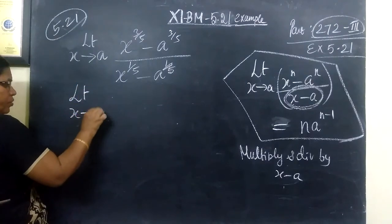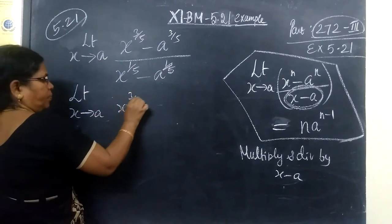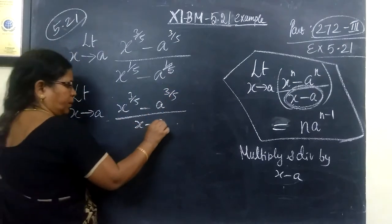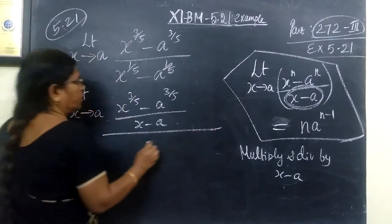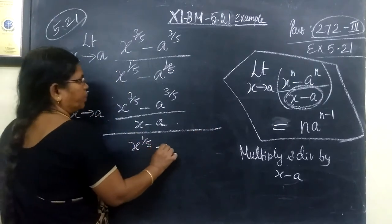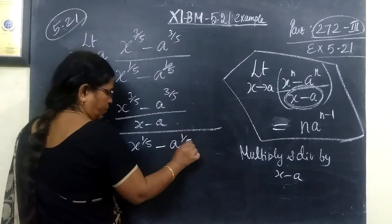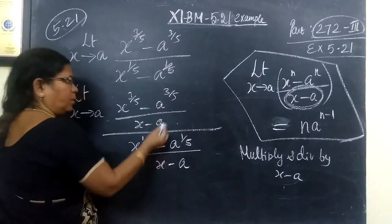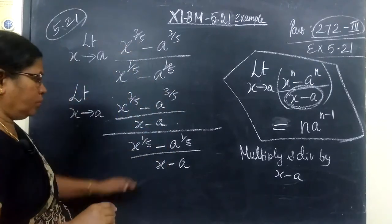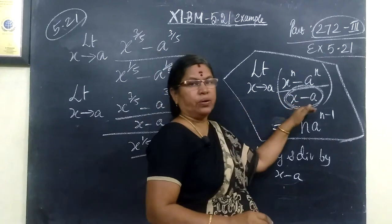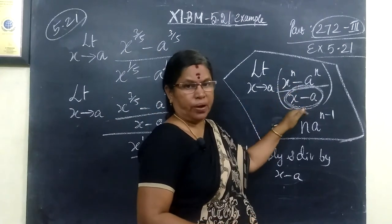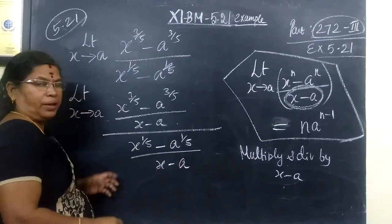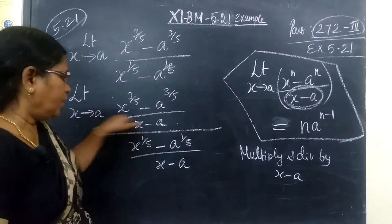So: limit as x tends to a of (x^(3/5) - a^(3/5)) / (x - a), divided by the limit of (x^(1/5) - a^(1/5)) / (x - a). We write one (x - a) in the numerator and another (x - a) in the denominator — this is the purpose of applying the formula.